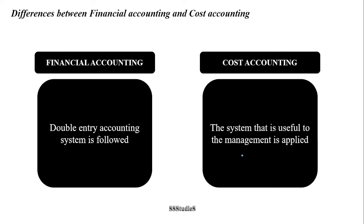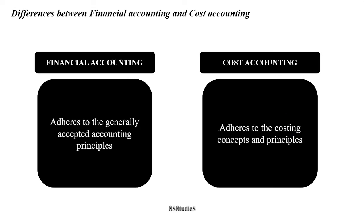Financial accounting follows a double entry accounting system, where each business transaction has two sides — the debit side and the credit side. Whereas in case of cost accounting, the system most useful to the management is applied; there is no hard and fast rule that cost accounting has to be maintained in a particular format only — it is prepared as per the requirements of the management. Additionally, financial accounting adheres to generally accepted accounting principles (GAAP), whereas cost accounting adheres to costing concepts and principles.